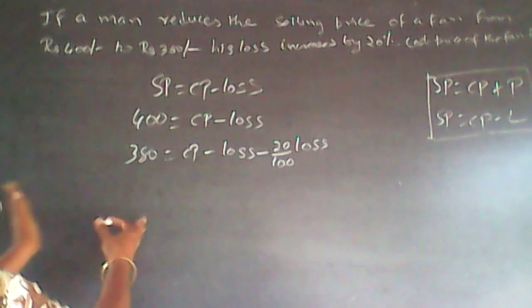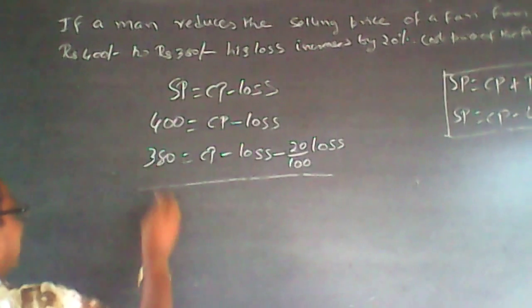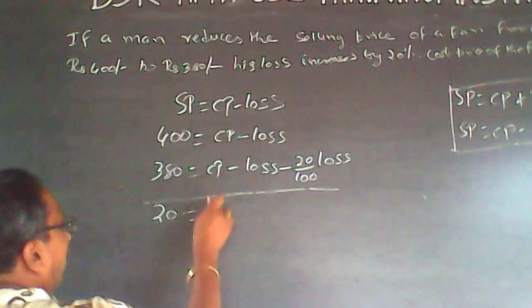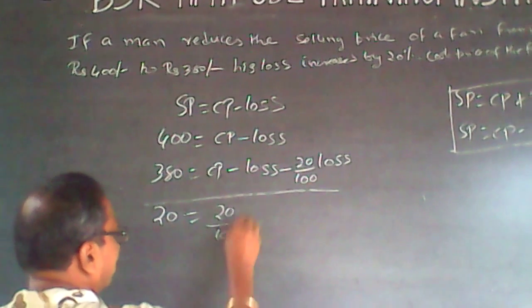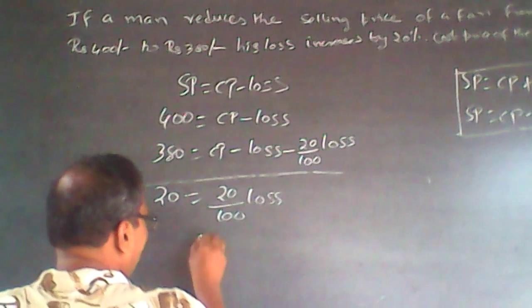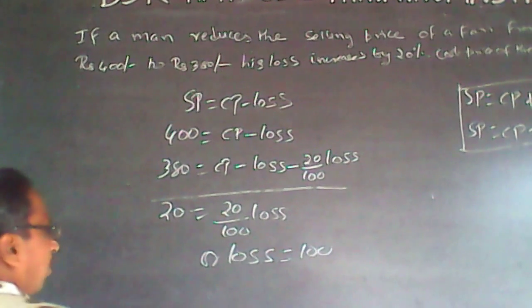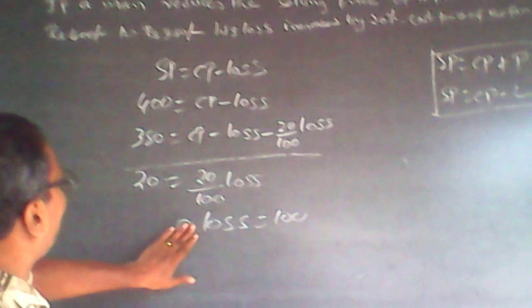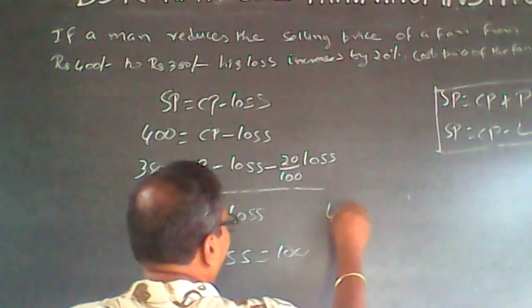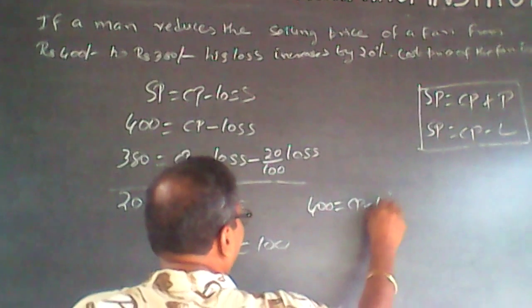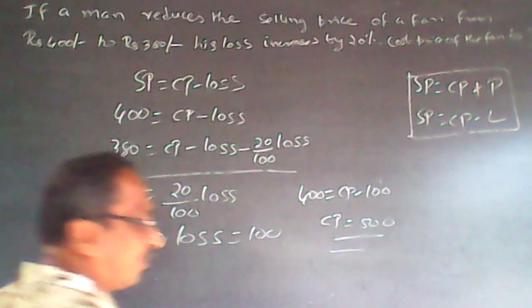Now just subtract the two equations. The CP terms cancel out, and the loss terms cancel, leaving: 20 = 20/100 of loss. Therefore loss equals 100. Substituting back: 400 = CP minus 100, so CP equals 500.